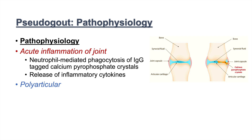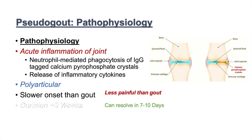Pseudogout is generally polyarticular and has a slower onset than gout. It usually lasts for about three weeks and is self-limiting. The body can actually take care of these calcium pyrophosphate crystals through neutrophil-mediated phagocytosis.